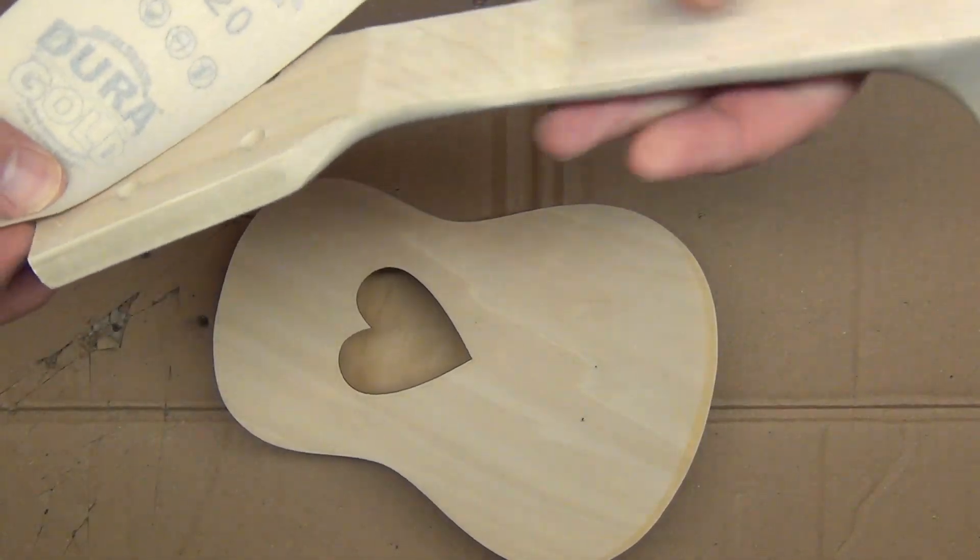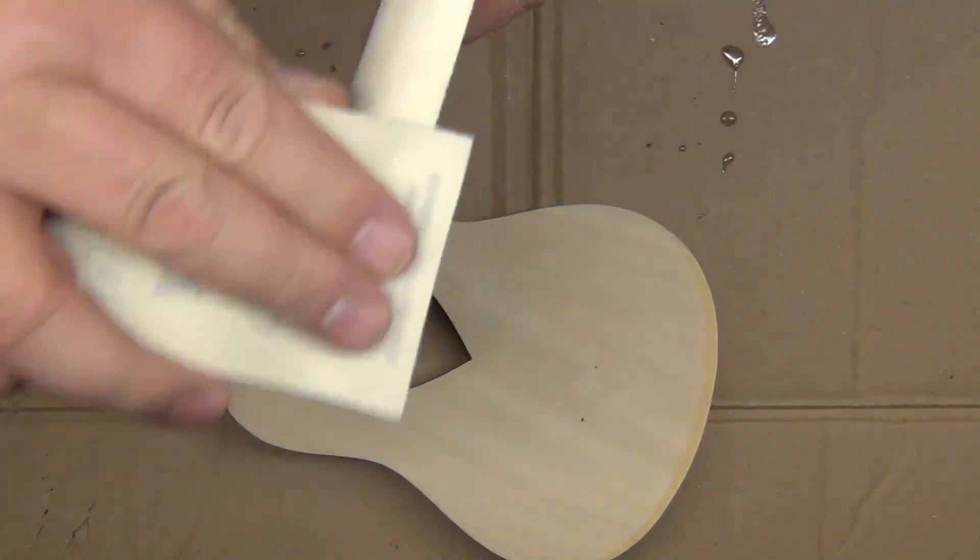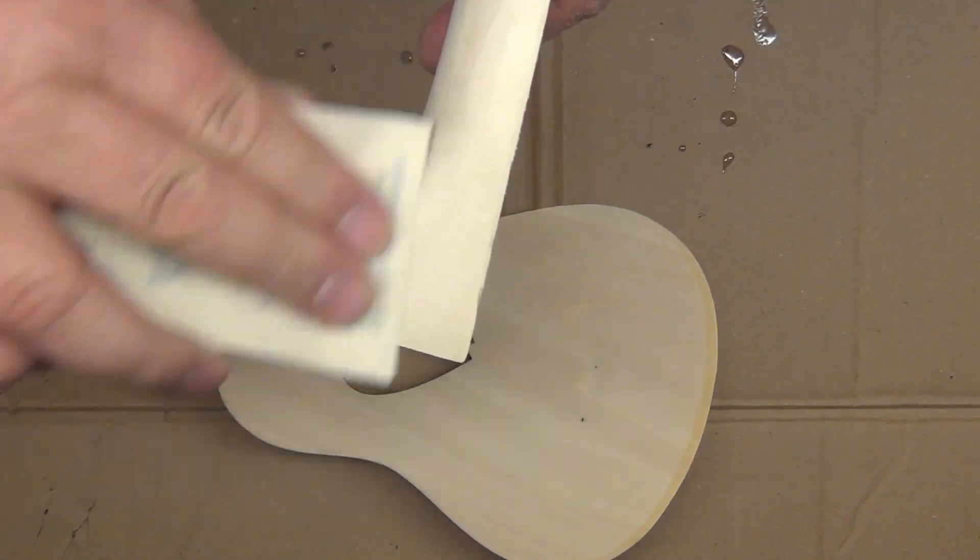Then I went to a 220 grit paper and just worked the entire neck, the whole neck, until the whole thing was smooth.